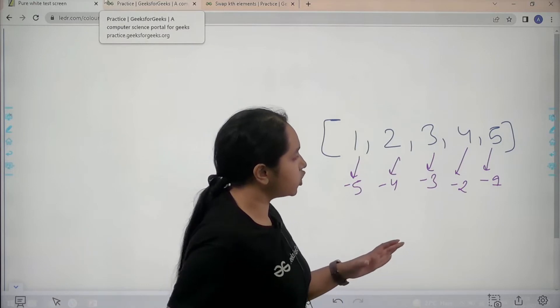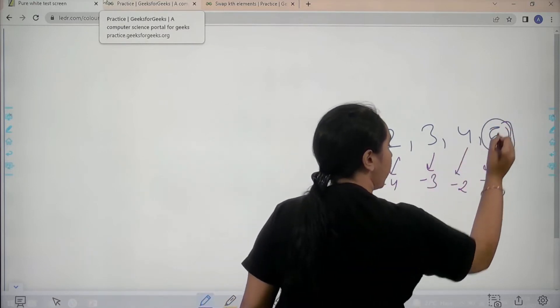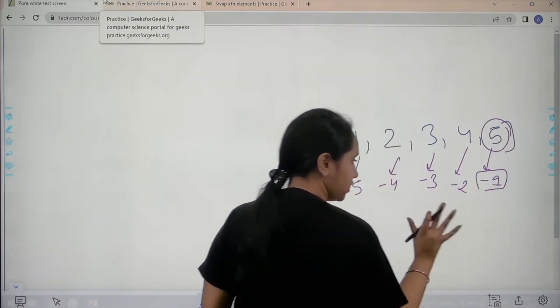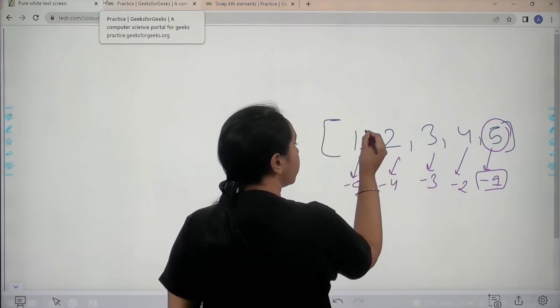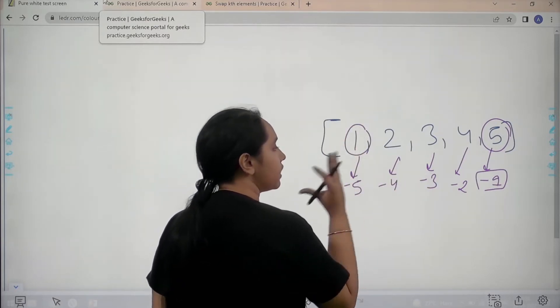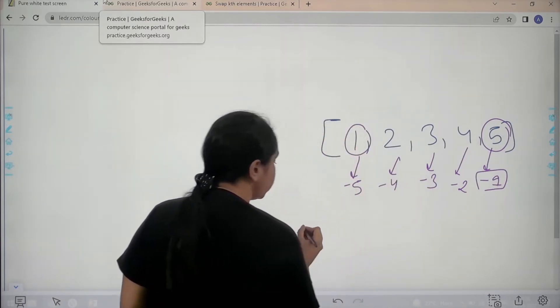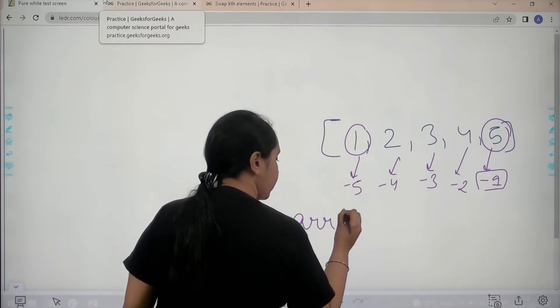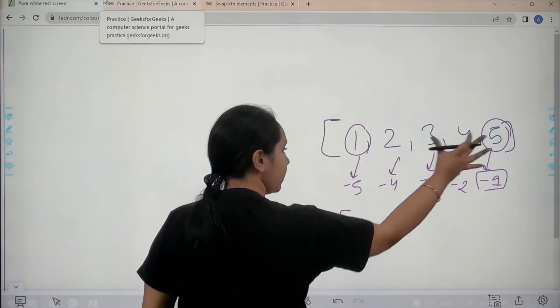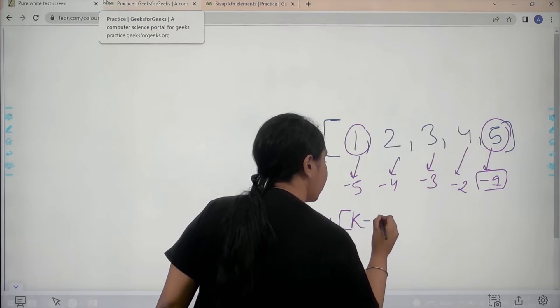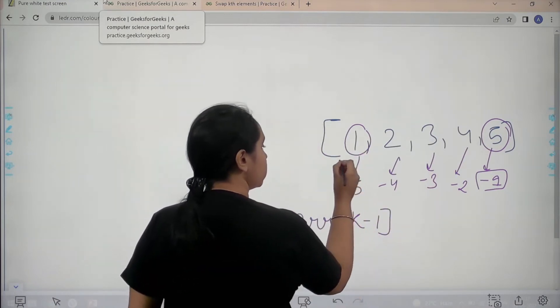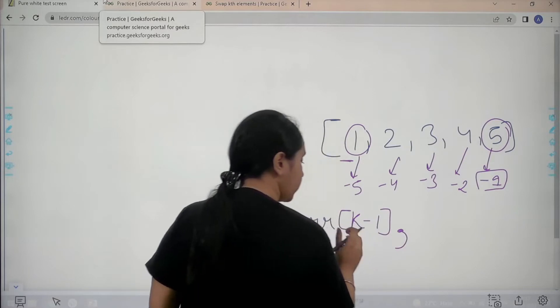So basically my question is that I need to swap this minus 1 index position which is fixed with the last element or basically the first element. So what I can do is I can just write array k, k is the size. So k minus 1. This is this, k minus 1 comma.